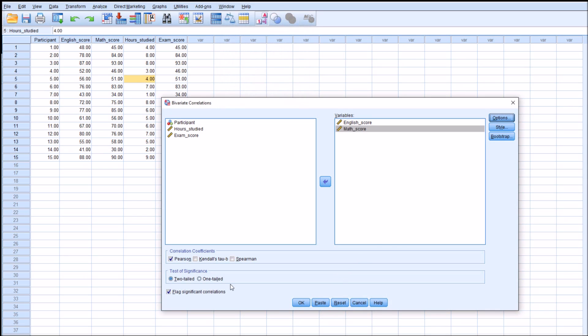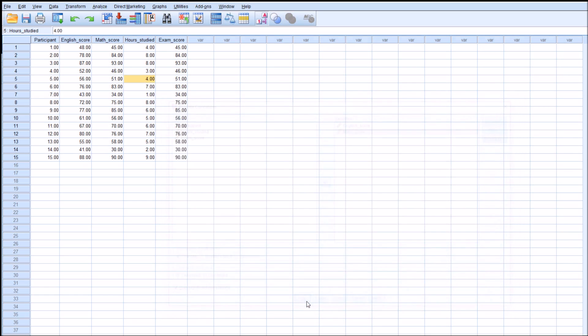And if you want to have a one-tailed or two-tailed, you just click which direction you're looking for. Because I'm not sure which direction my correlation will lie, I'm just going to be using a two-tailed test of significance. And we simply click OK.